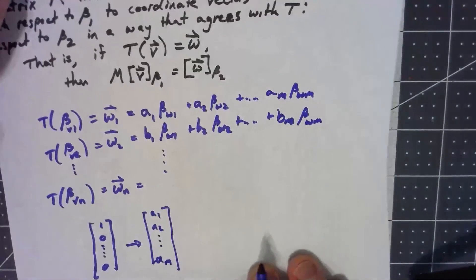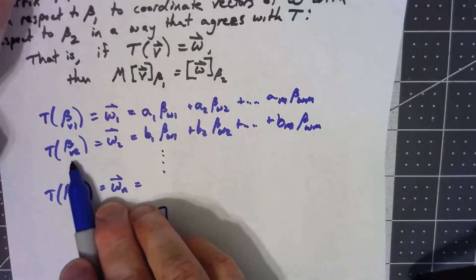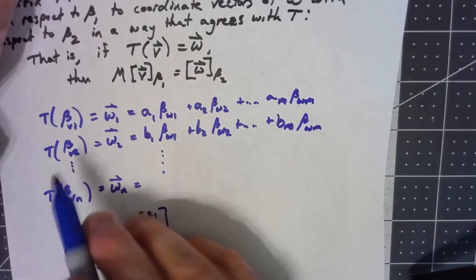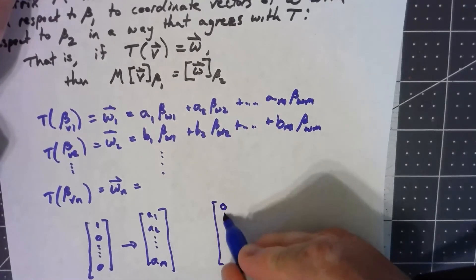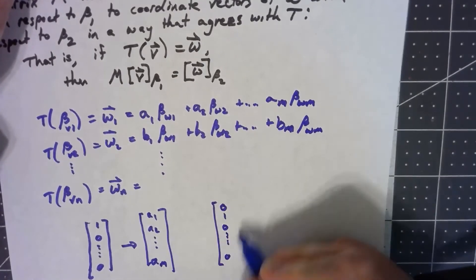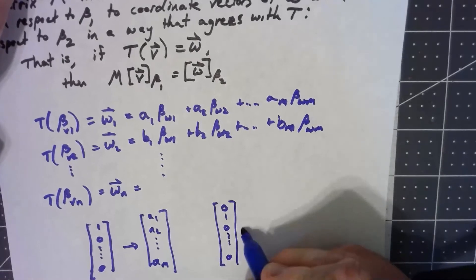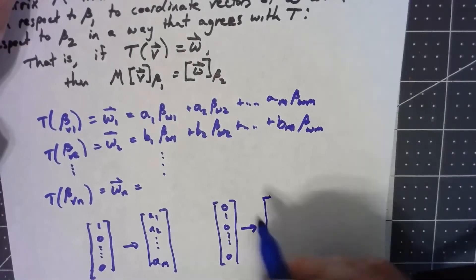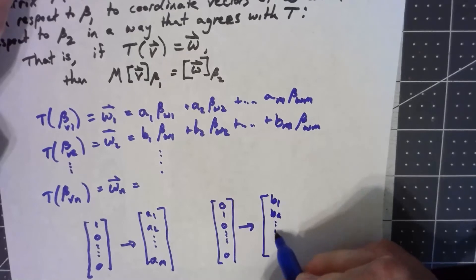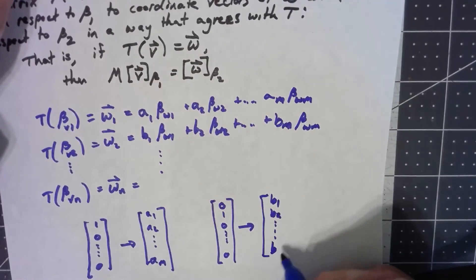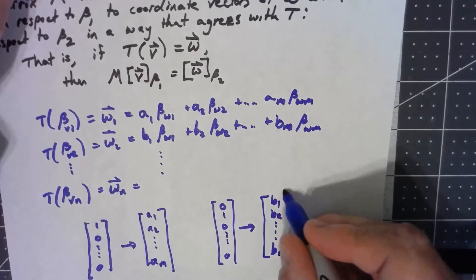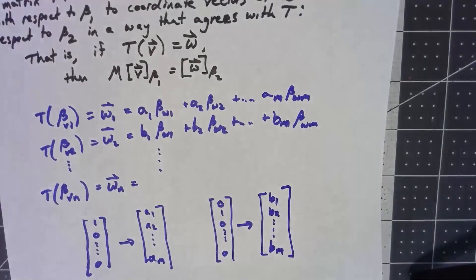The second one, it's the second basis vector for V, so its coordinate vector would be 0, 1, 0 all the way down, and then that's mapping to B1, B2, all the way up to BM. And so on down the line.